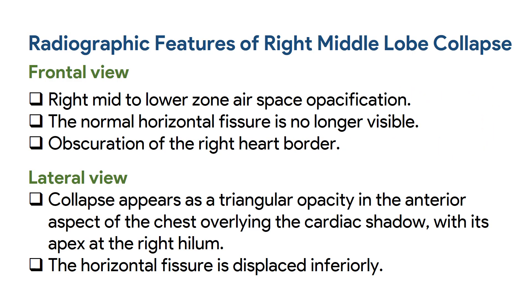Now let's discuss the radiographic features of right middle lobe collapse. The frontal view usually shows right mid to lower zone airspace opacification. The normal horizontal fissure is no longer visible.